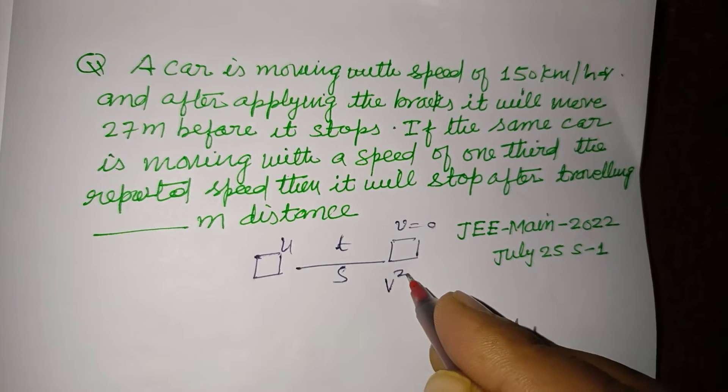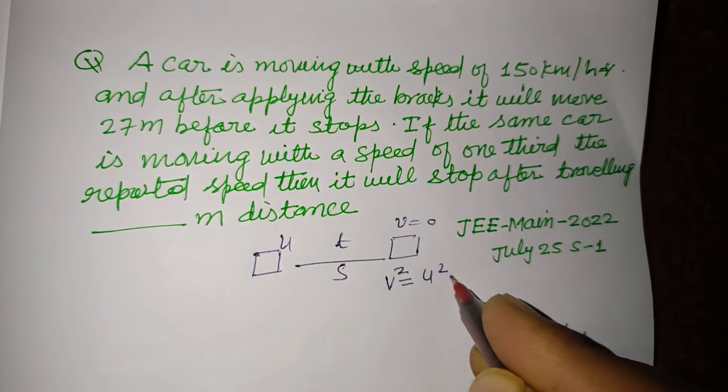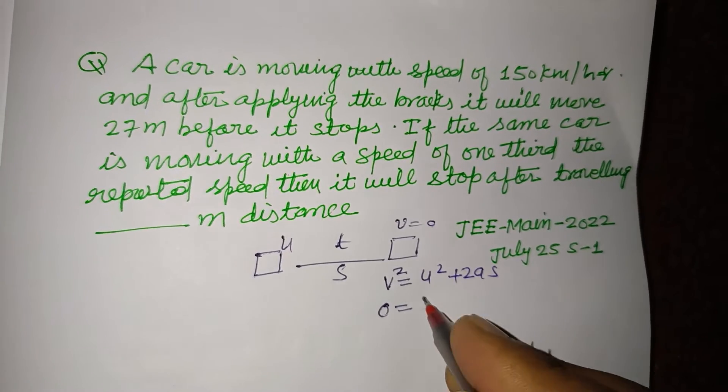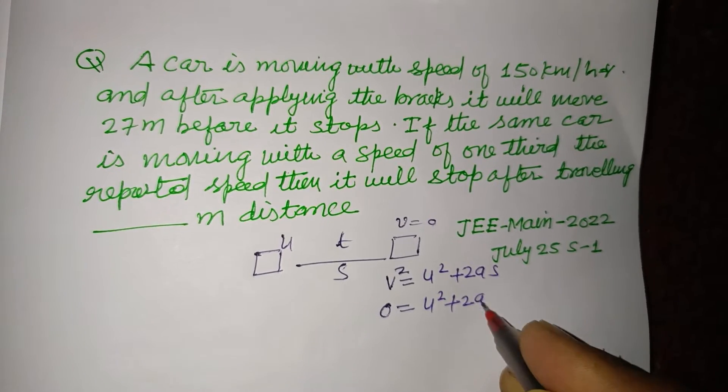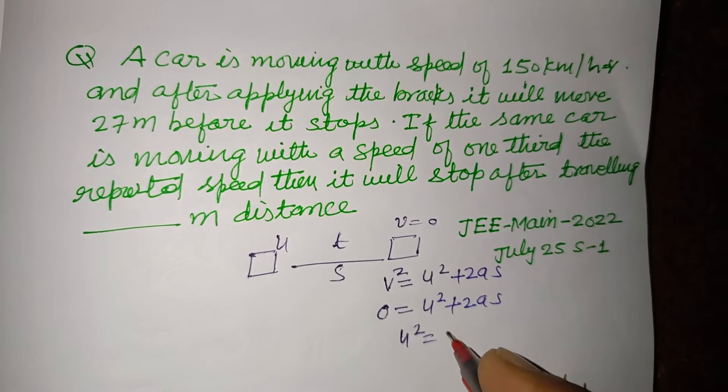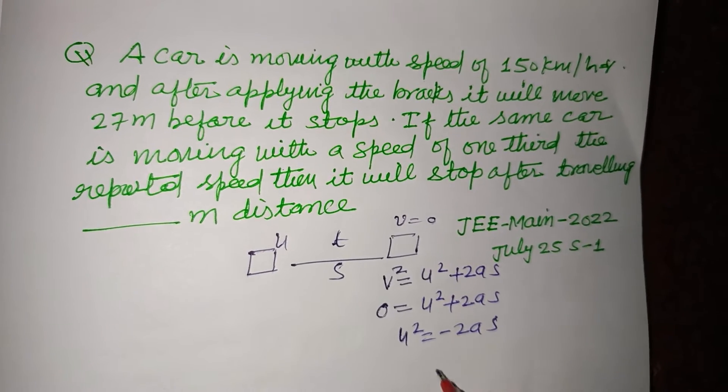So v square equal to u square plus 2 a s. Here final velocity is zero, so 0 equal to u square plus 2 a s, so u square equal to minus 2 a s.